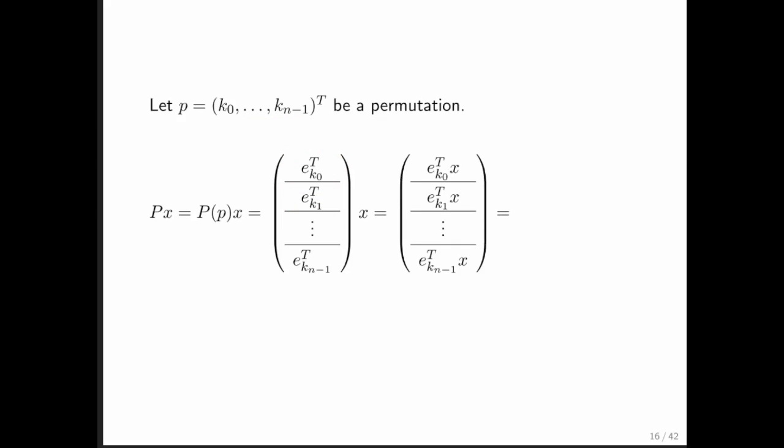And we have learned how to do a partition matrix matrix multiply. In this case, this is a matrix partitioned by rows. And this actually is a vector viewed as a matrix that isn't partitioned at all. And if we then multiply that out, we get this right here.